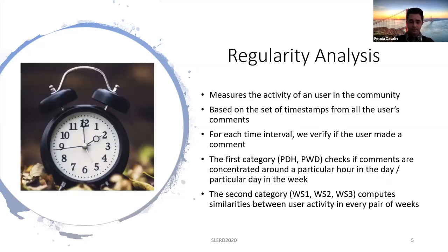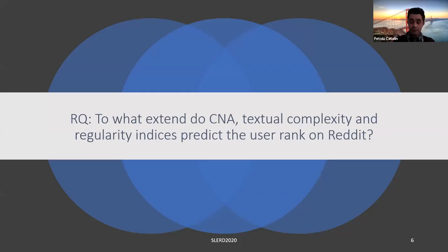Another topic is regularity analysis, which measures the activity of a user in the community and unveils their patterns of interaction. It is simply based on the set of all timestamps for the user's comments, which are sorted. Based on those timestamps, for every time interval we can verify if the user made a comment in that specific interval. We computed two main categories of indices: BDH and PWD, which check if user comments are concentrated around a particular hour in the day or a particular day in the week, and WS1, WS2, or WS3, which compute various similarities between the user activity in every pair of weeks in the whole timeframe analyzed.